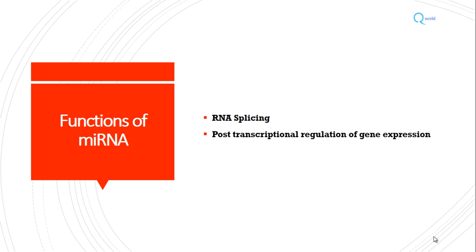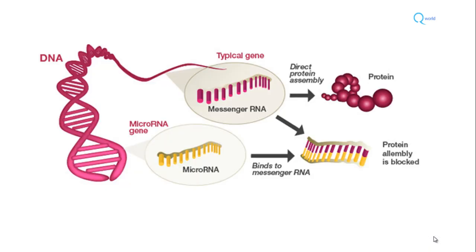This diagram depicts the basic function of micro RNA. In the normal scenario, DNA has typical genes that code for messenger RNA, and this mRNA undergoes translation to form normal proteins. Now, miRNA is also formed from the DNA strand — there are certain genes known as micro RNA genes which give rise to this micro RNA. This micro RNA then binds to already-formed mRNA and makes sure that the protein does not form. That is how it regulates gene expression — it is basically a negative regulator of mRNA.